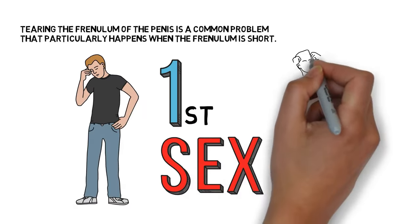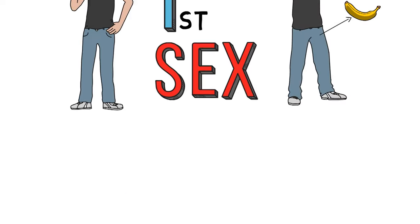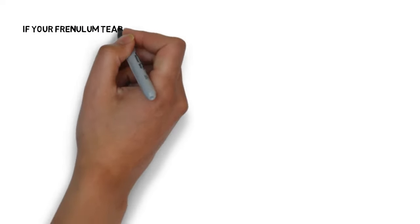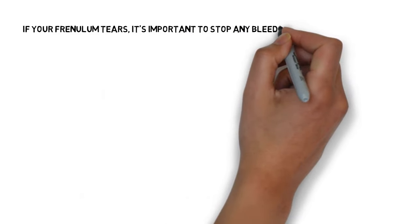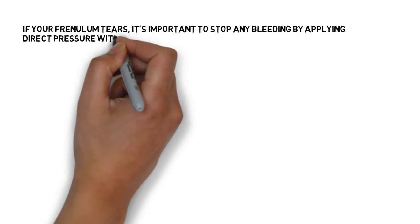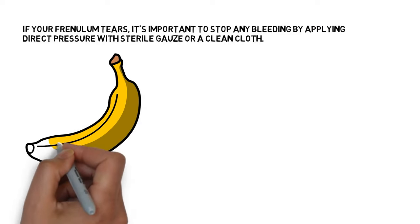If your frenulum tears, it's important to stop any bleeding by applying direct pressure with sterile gauze or a clean cloth. Tears most commonly happen when the penis is erect, when there is a higher concentration of blood in the area.